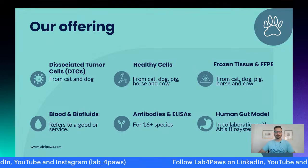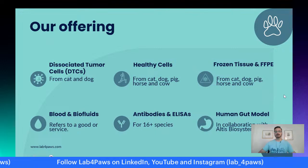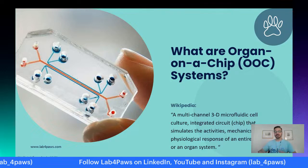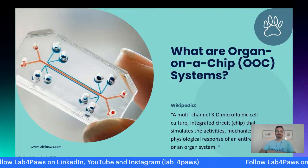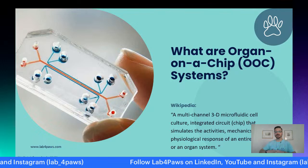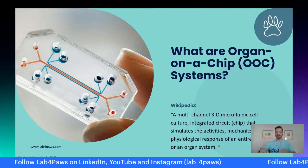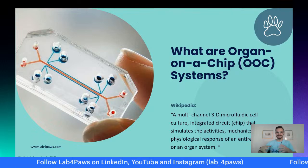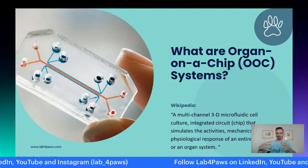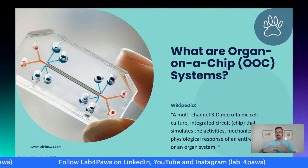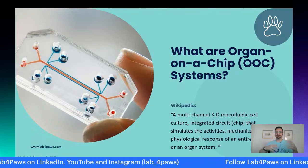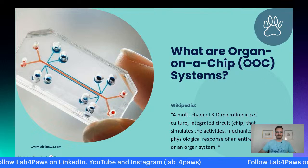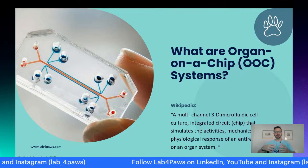Today we will focus a bit more on another kind of organ-on-chip. Wikipedia tells us that an organ-on-chip is a multi-channel, 3D, microfluidic cell culture integrated circuit chip that simulates the activities, mechanics, and physiological response of an entire organ or organ system. There are different key pieces involved: first, it is multi-channel, meaning different channels working in parallel. There is fluidics involved most of the time, and the model is a 3D model.